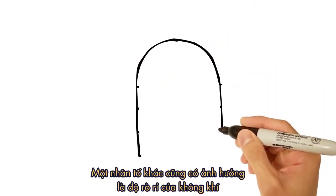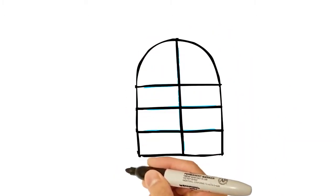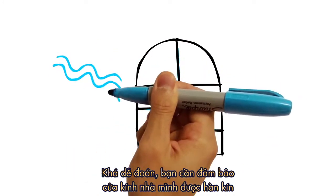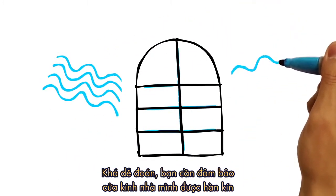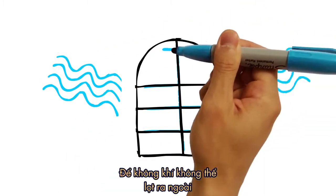Another factor affecting comfort, air leakage, may also be measured. As you can guess, air leakage has to do with ensuring your windows are sealed tight so that the air doesn't escape.